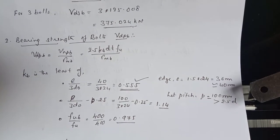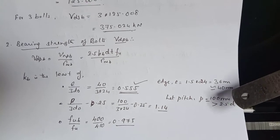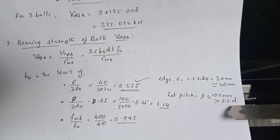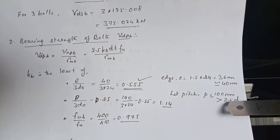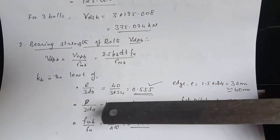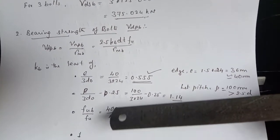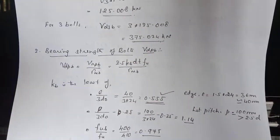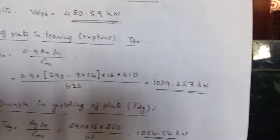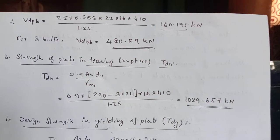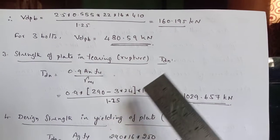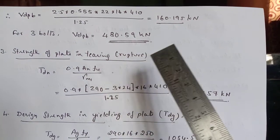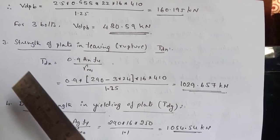So here let us compute the edge distance. Edge distance we will take 1.5 into 24 works out to be 36. Let us call it as 40 mm and the pitch we will take it as 100 mm which is greater than 2.5 into d, 2.5 into 22. So by default 100 mm is greater than 2.5 times d. So upon working out we get first value as 0.555, second value as 1.14, third value as 0.975 and fourth value as 1. Out of these 4 least value is 0.555. So we will take KB equal to 0.555 as the answer.